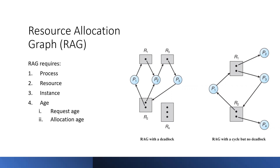For example, if we talk about instance of R1, P2 has an instance assigned from R2 and R1, and P2 is further requesting R3. If we talk about R3, R3 is assigned to P3, and P3 is requesting R2 as well. In this graph, we can see which processes, resources, and instances exist, which process is assigned to which instance, and which resource is required by which process.